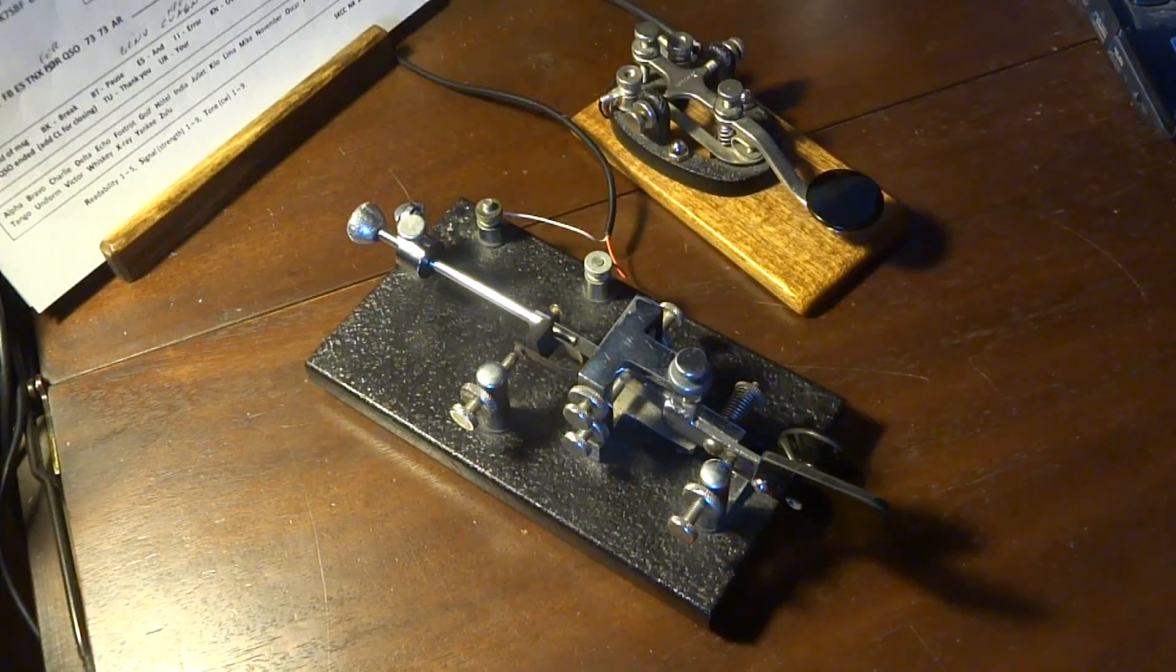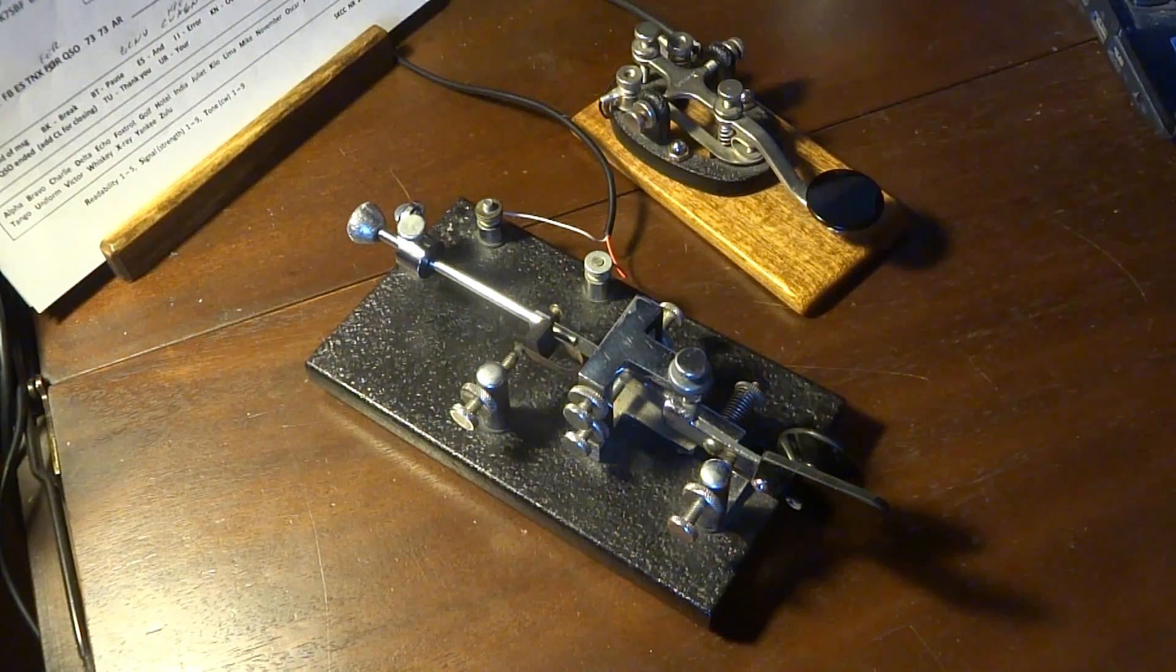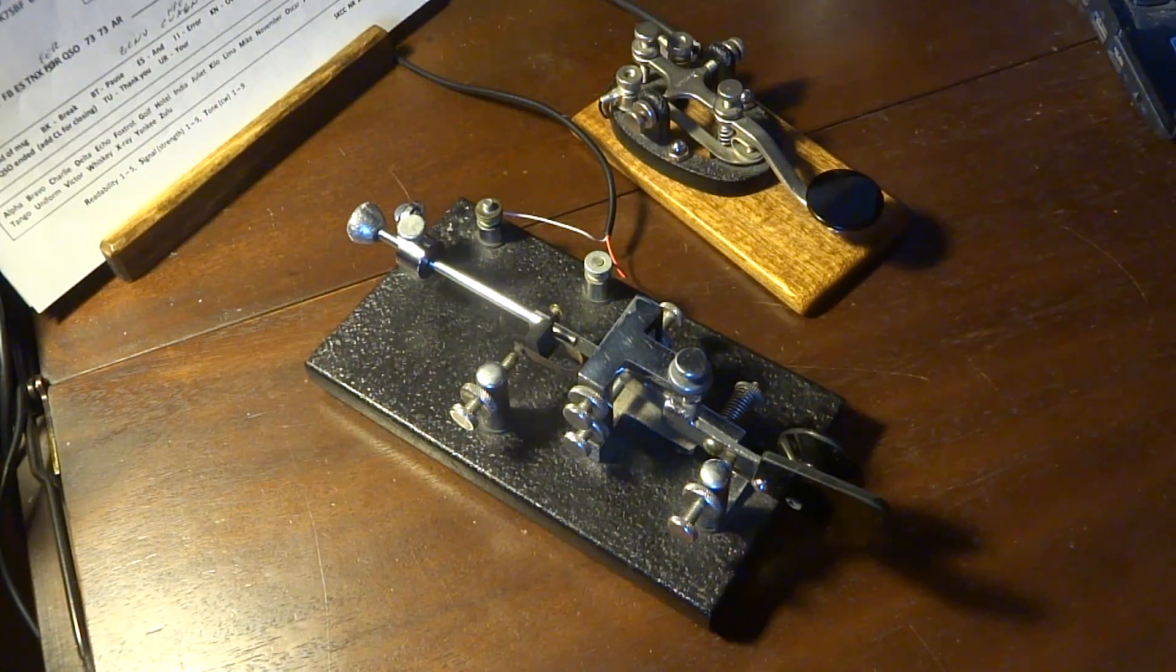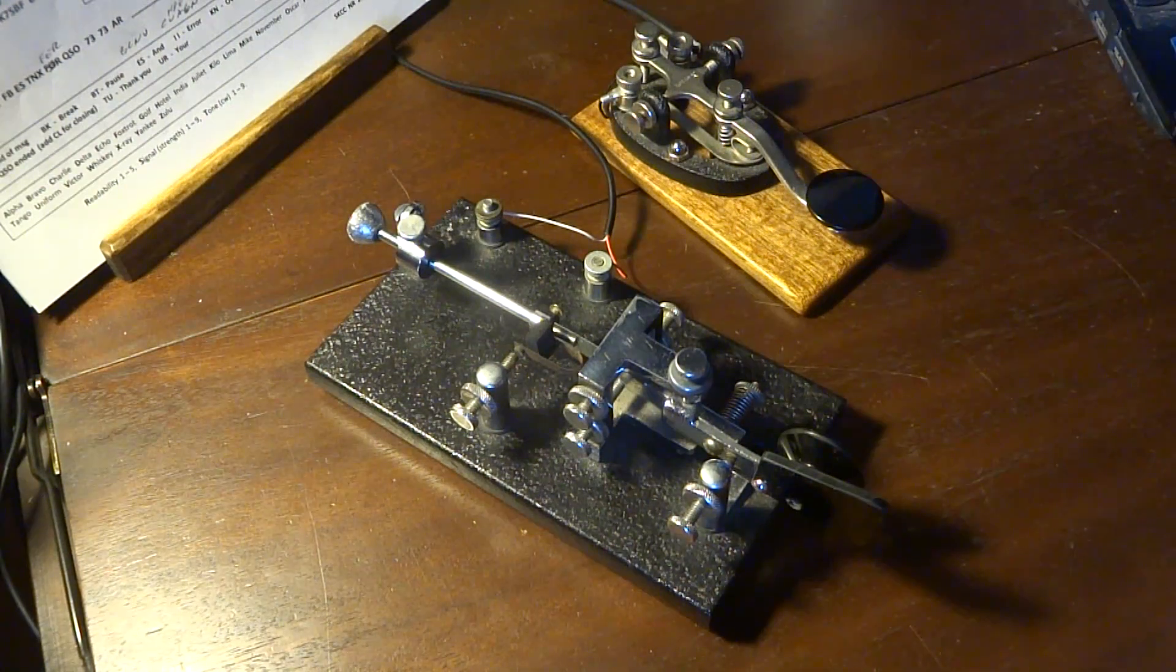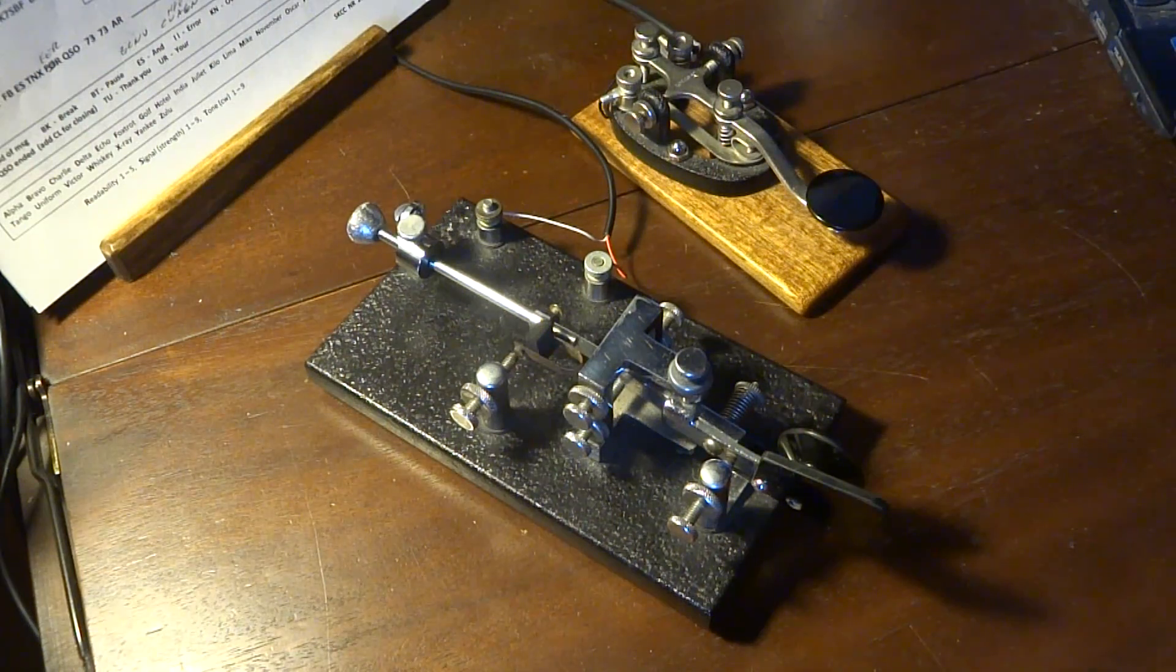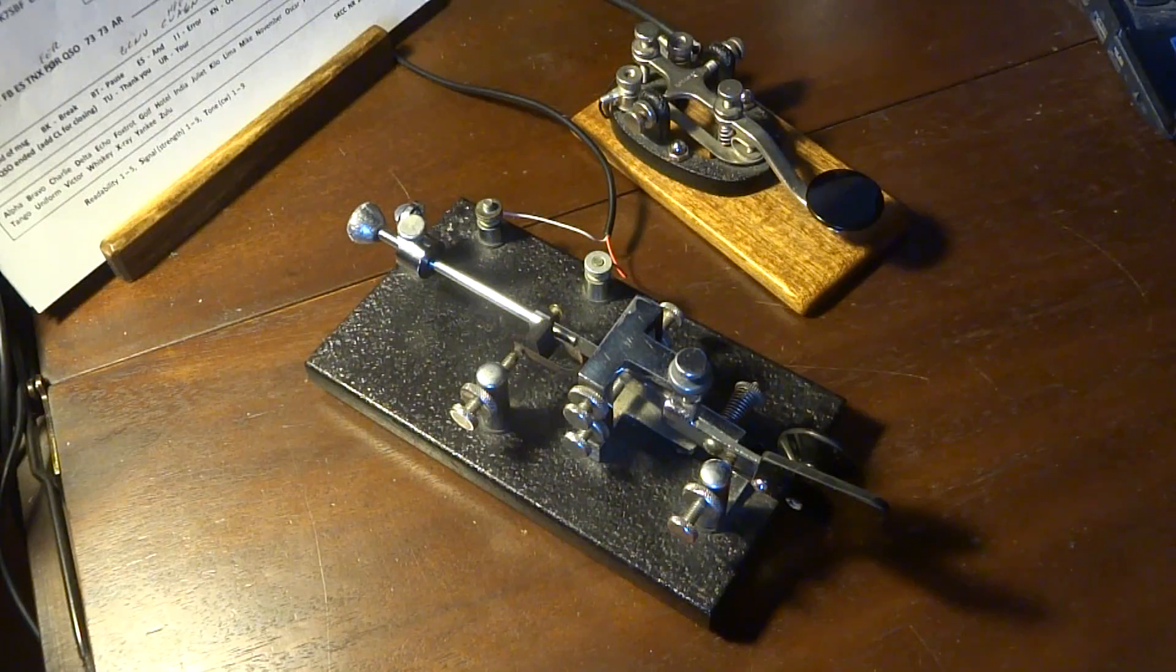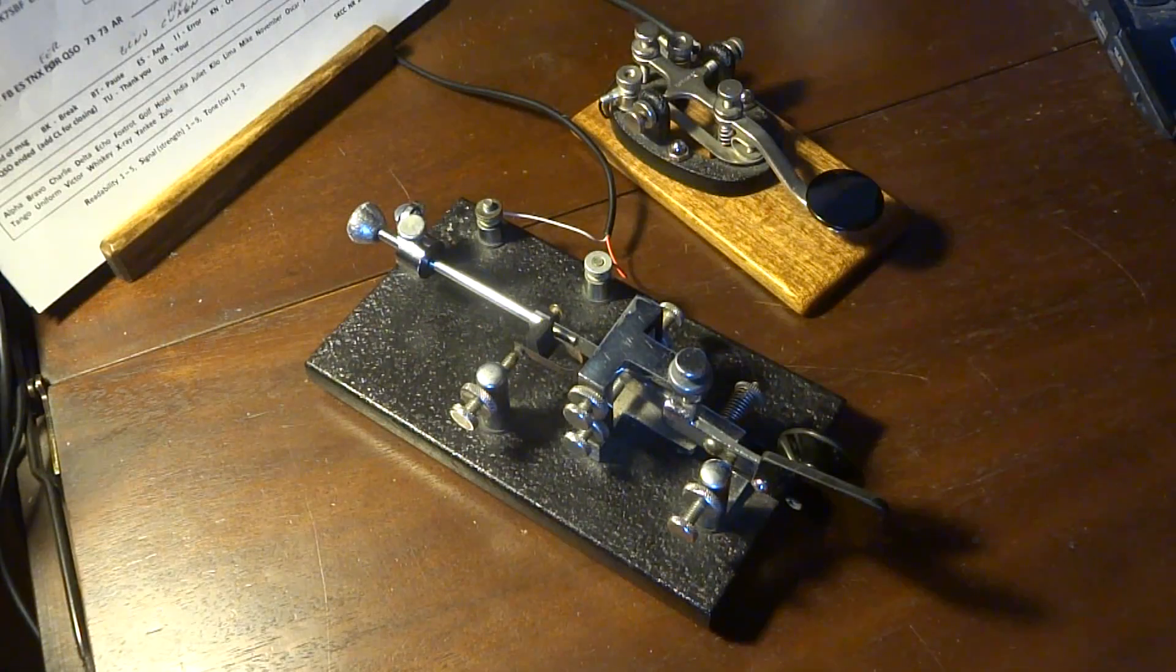So you send CQ, CQ, CQ, this is, or I am. And that is the letter D and E in Morse code. And then you send your call sign or your radio license, kind of like a license plate number for your car. The government licenses you as your own radio station, basically.